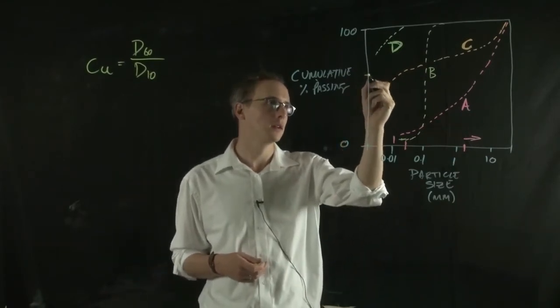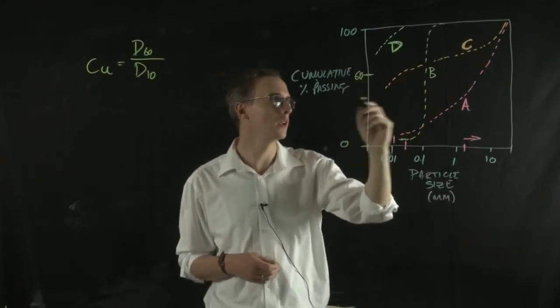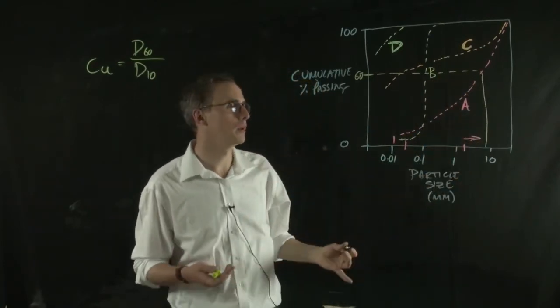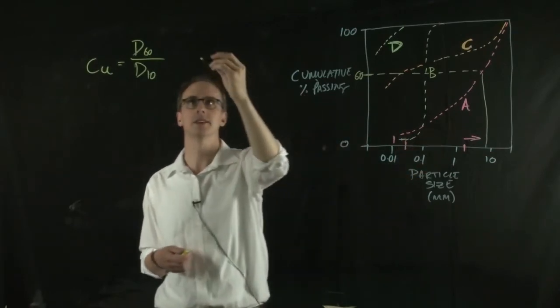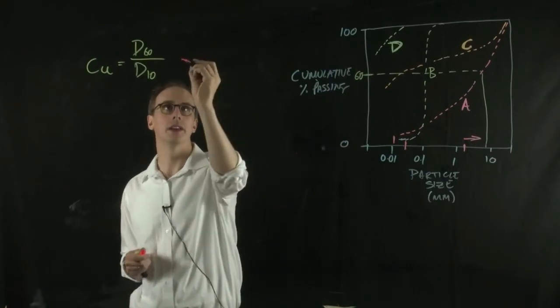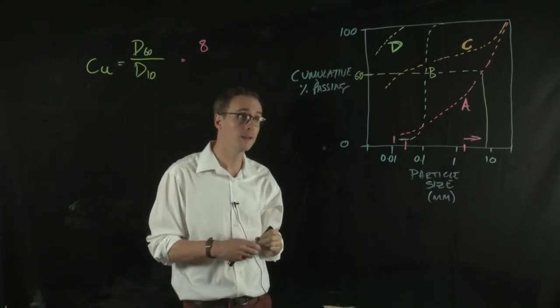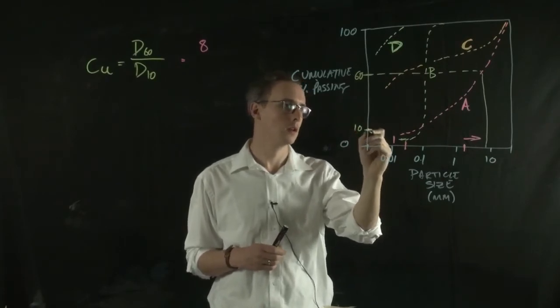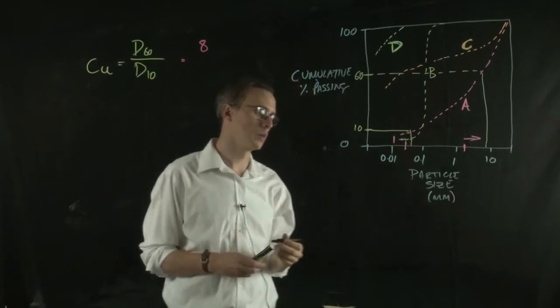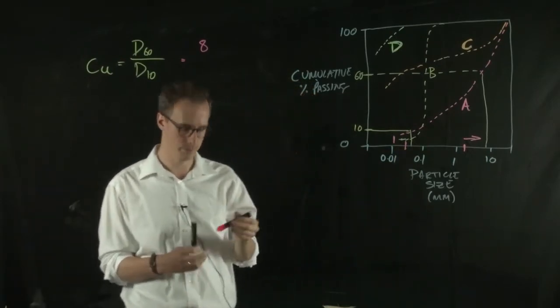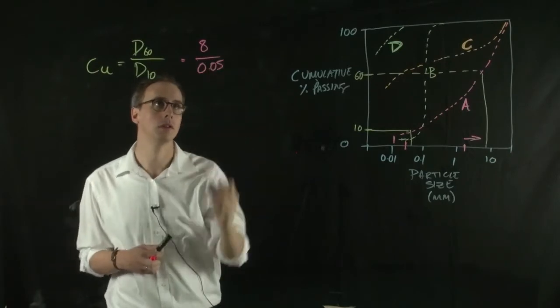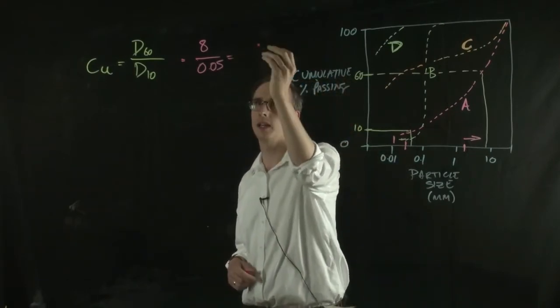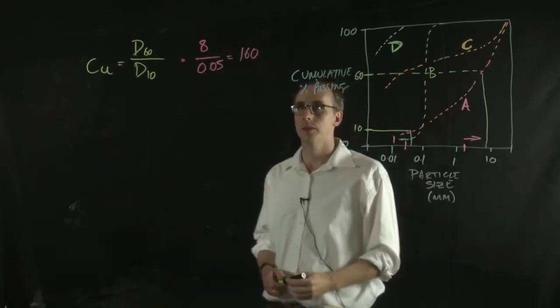Now the d60 is the diameter at which 60% of the particles pass. If we take 60% here and we're looking at line A, we go through to line A. Our d60 would maybe be around 8 millimeters. So in this case for line A it would be 8 millimeters. And then the d10 is the diameter which 10% of the material passes. Let's say that's somewhere around 0.05. So for line A, our coefficient of uniformity, CU, would be 160.